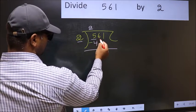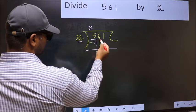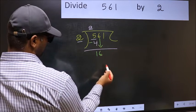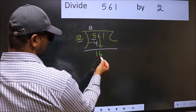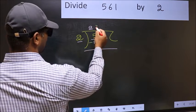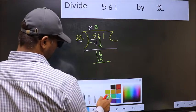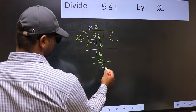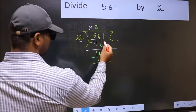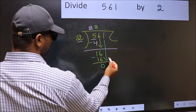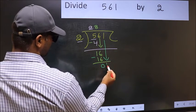After this, bring down the beside number. So 6 down. Now 16. When do we get 16 in 2 table? 2 8s, 16. Now you should subtract. 16-16, 0. After this, bring down the beside number. So 1 down.